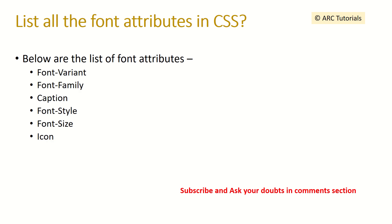List all the font attributes in CSS — what are the different things you can do with fonts? We can use 'font-family', 'font-variant', 'caption', 'font-style', 'font-size', and 'icon'. These are the different attributes related to font that we can use in our styling.